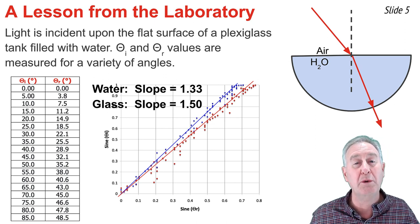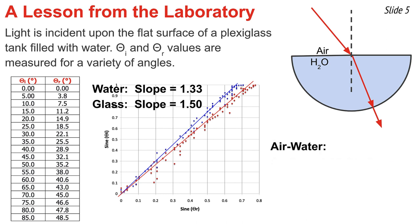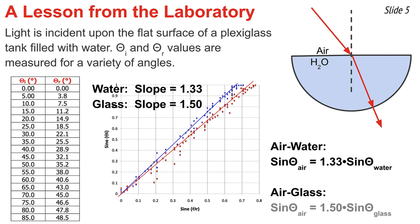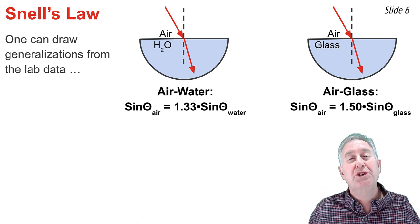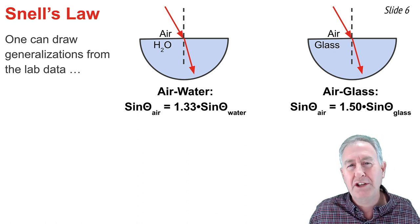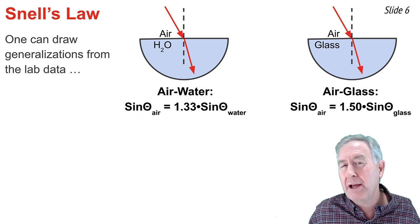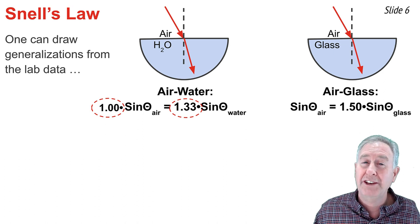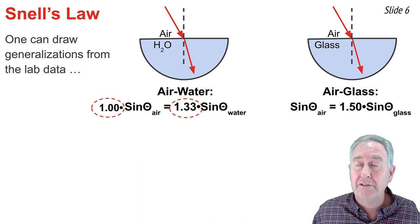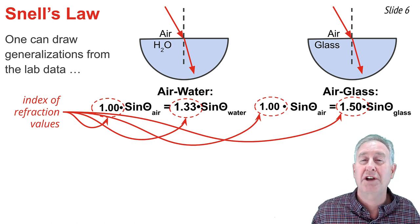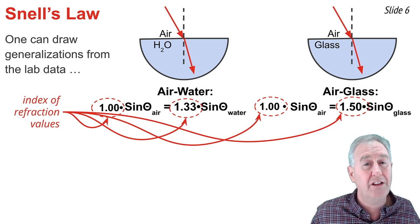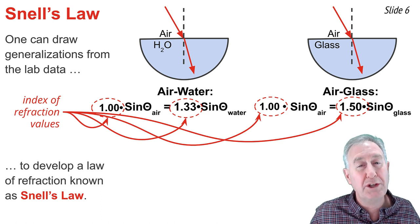Using y = mx + b, we can write equations for these lines. For air to water, the sine of the angle in air equals 1.33 times the sine of the angle in water. For air to glass, it equals 1.50 times the sine of the angle in glass. In science, we generalize experimental findings to broader conclusions. Here, 1.33 and 1.00 are the indices of refraction of water and air, and 1.50 and 1.00 are those of glass and air. This leads to Snell's Law of Refraction.